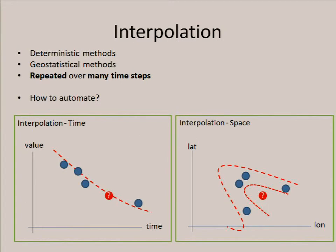Regarding interpolation, we have some observations and we want to estimate what the value was at a certain time where we don't have any observation. Or, as in the second example, we have a location and we want to estimate what the value was at that location, based on the surrounding locations, for example.